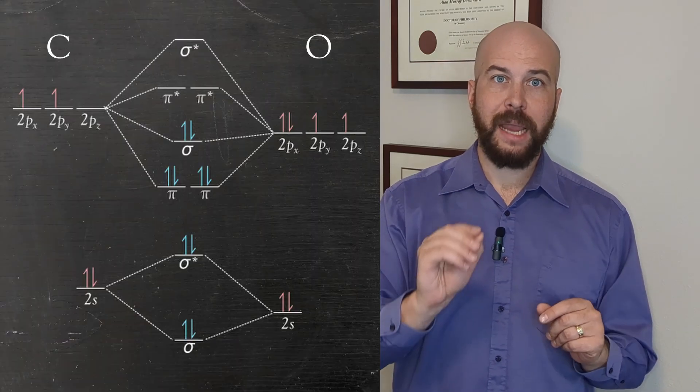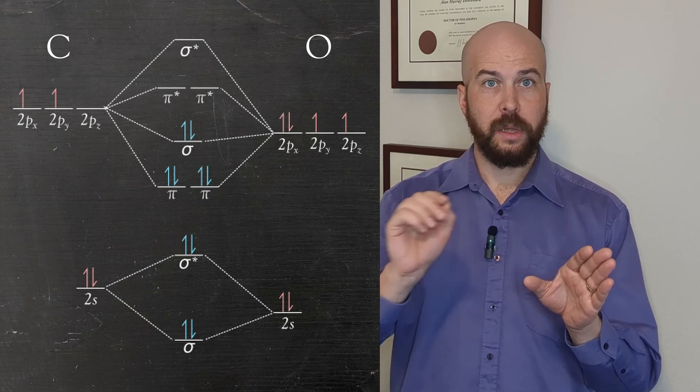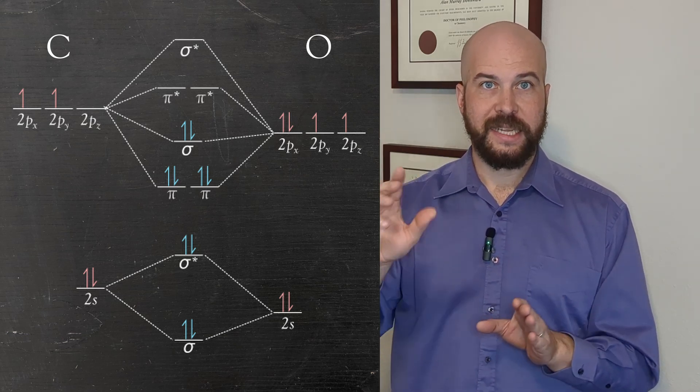Now that we have our molecular orbitals, it's time to put in our electrons. If we start from the bottom we go 1, 2, 3, 4, 5, 6, 7, 8, 9, 10.